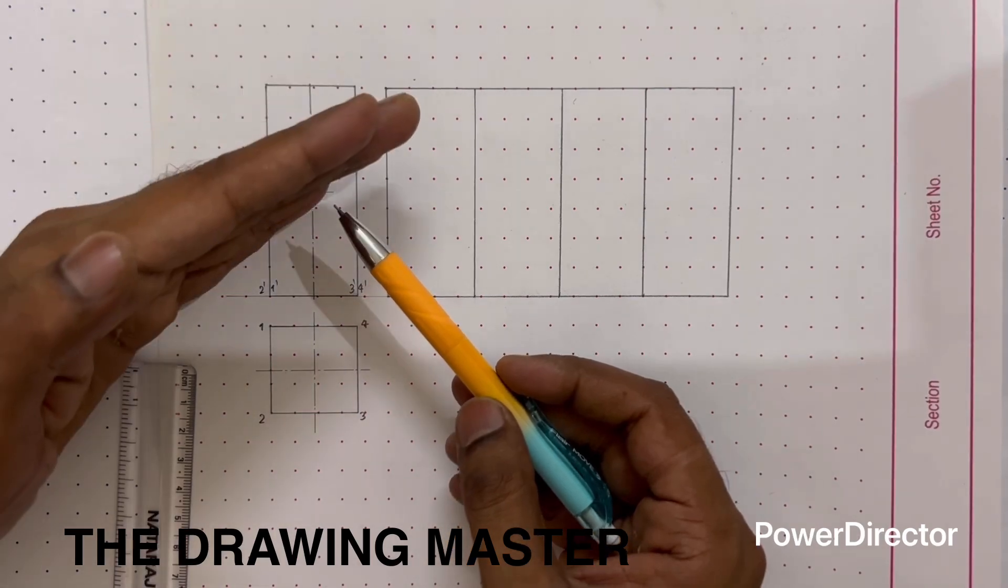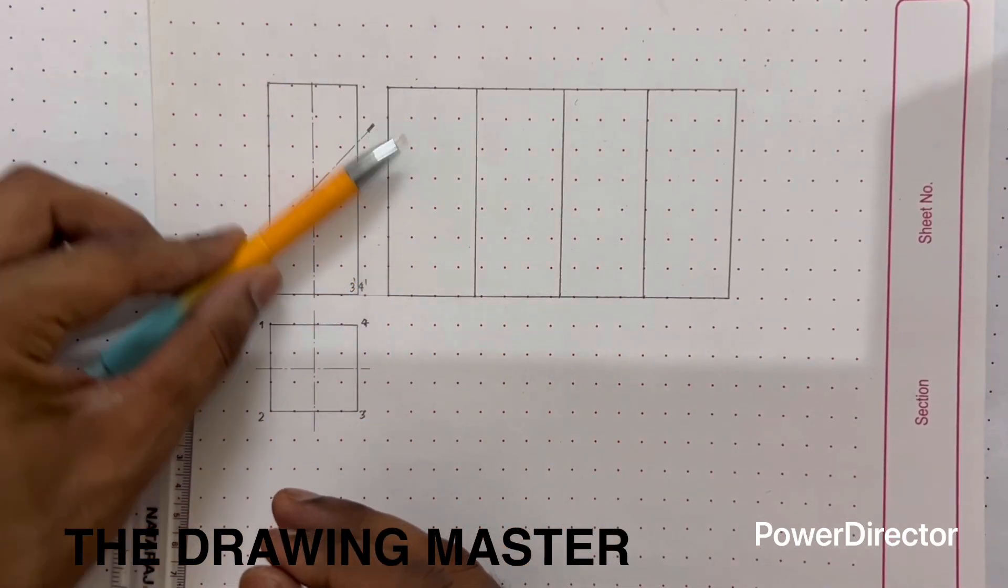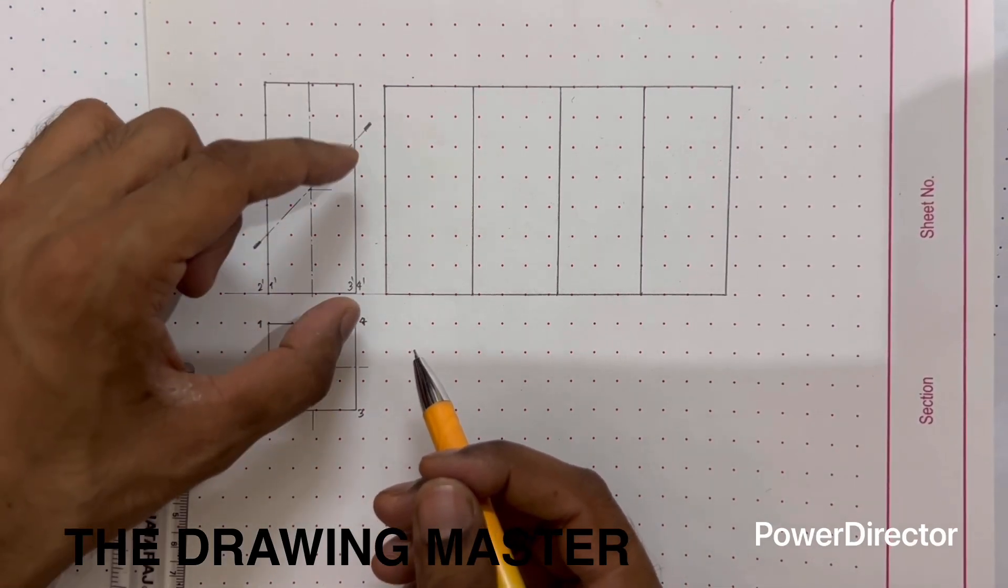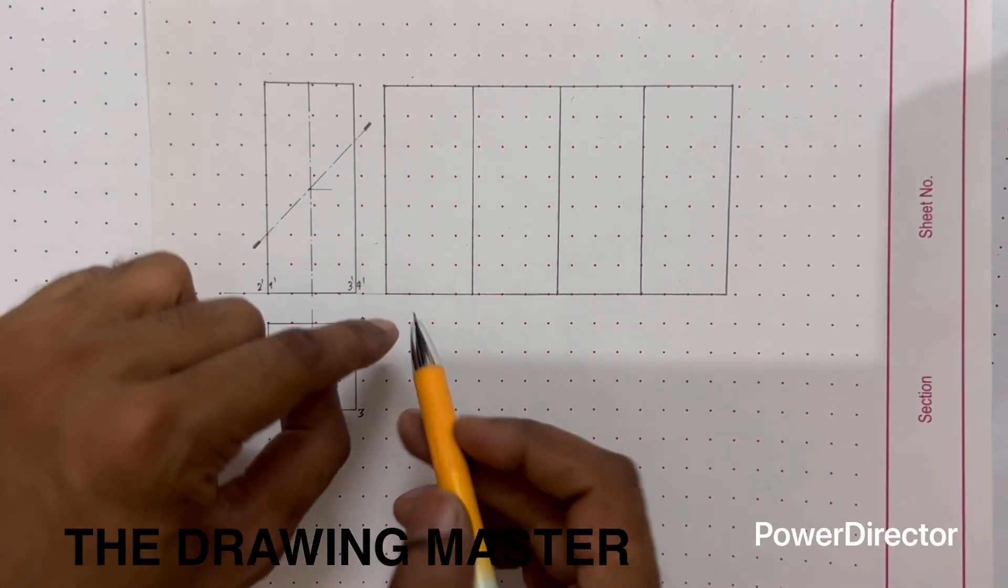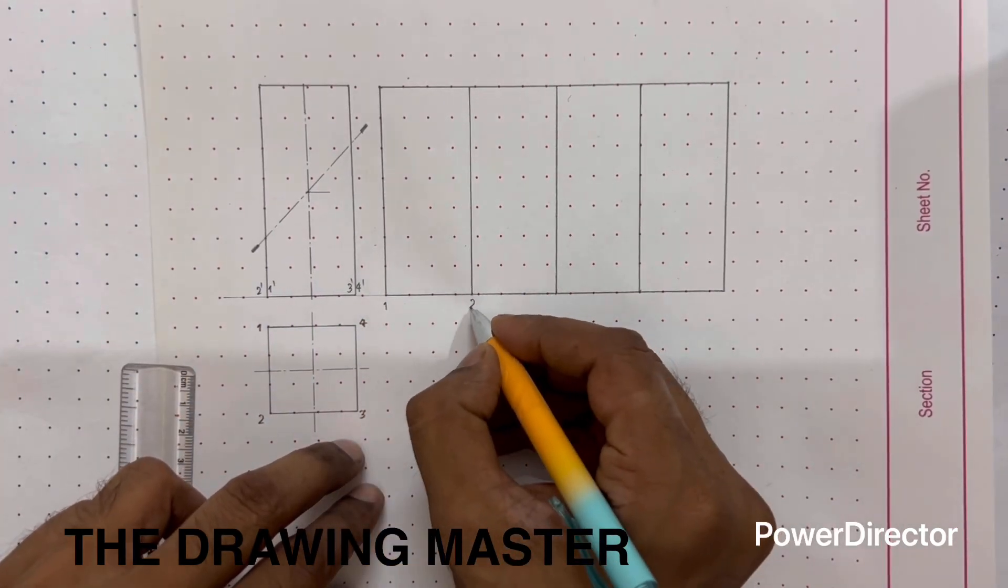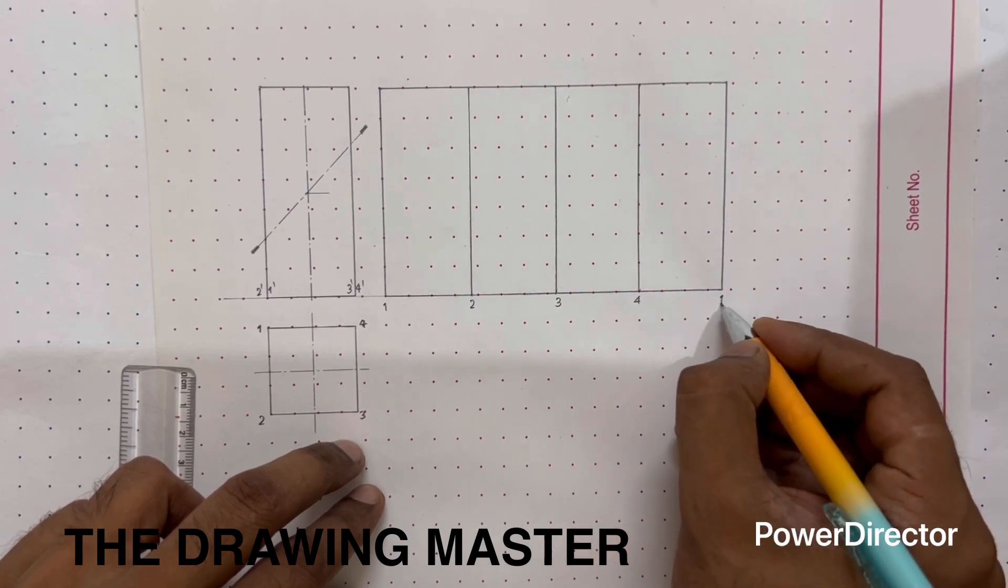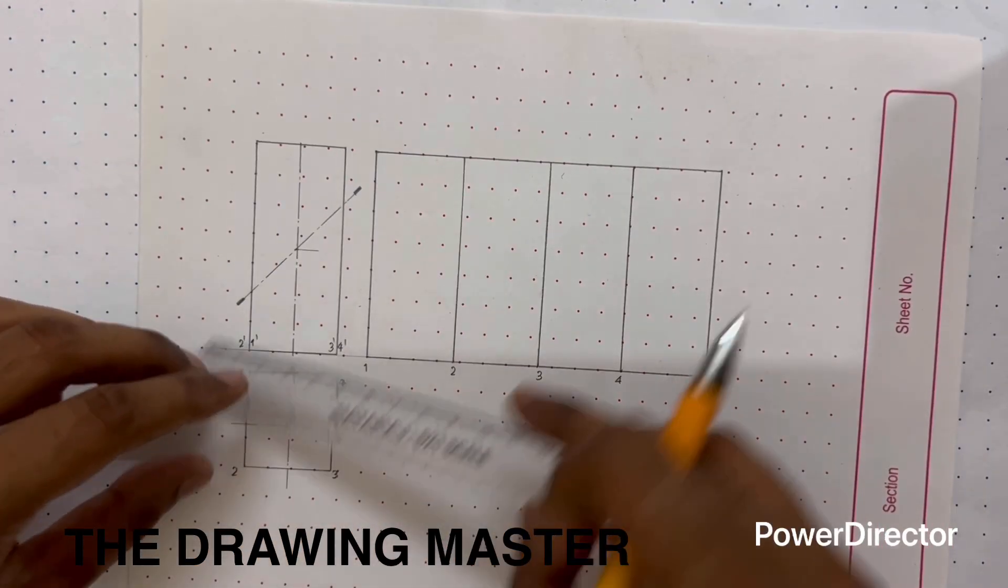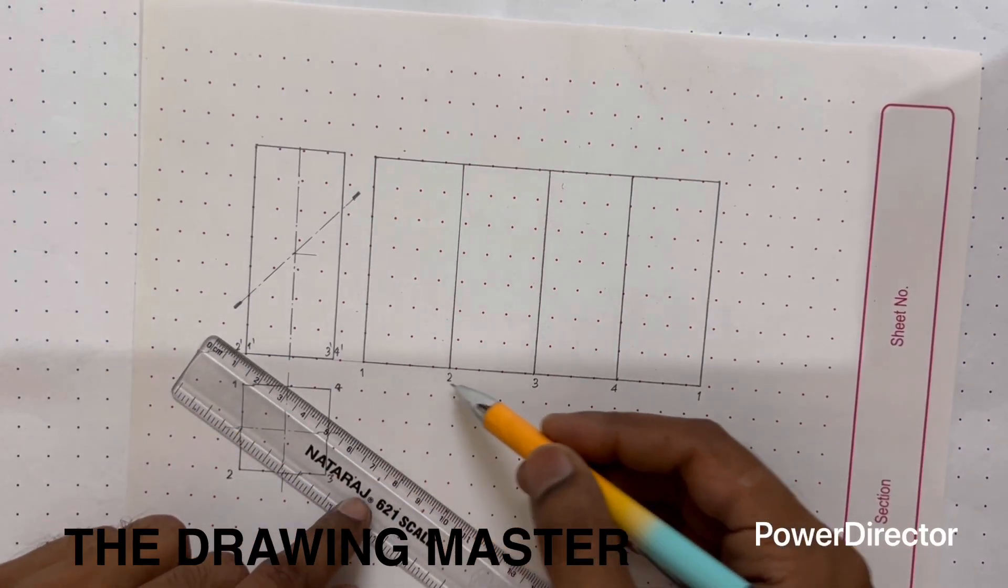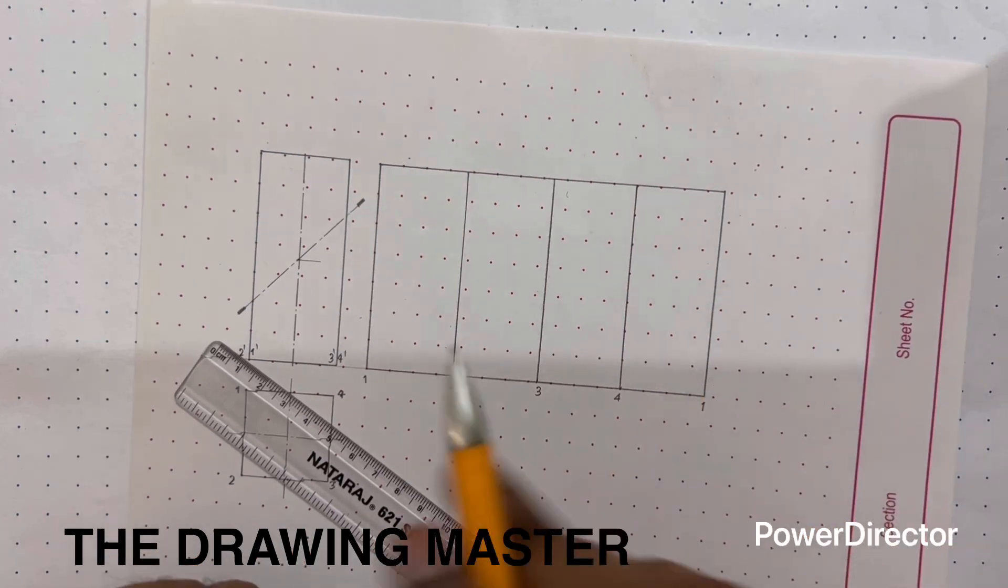After removing this portion, this portion is left with this height. This is the height of edge number 1, 2 and this is the height of edge number 3, 4. Let's do the labeling here. Here you can start it from 1, 2, 3, 4, 1. If you will start it from 3 or 2, like 2, 3, 4, 1, 2, that is also correct, there is no problem.